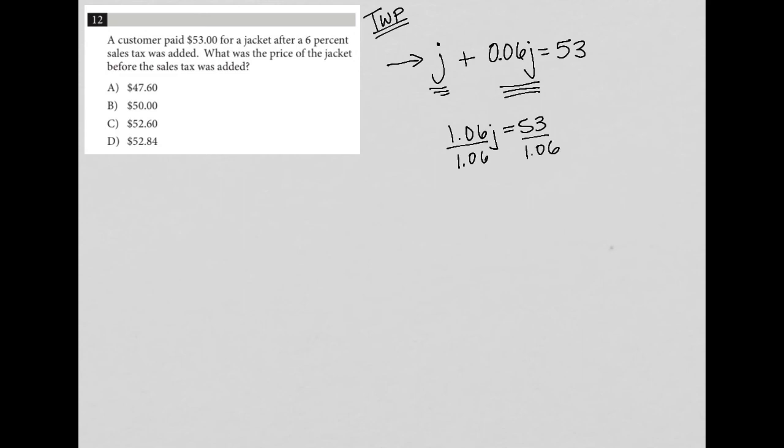Then I can go to my calculator and figure out, well, what is 53 divided by 1.06? And what I find here is that J is equal to $50. And therefore, the correct answer here is choice B.